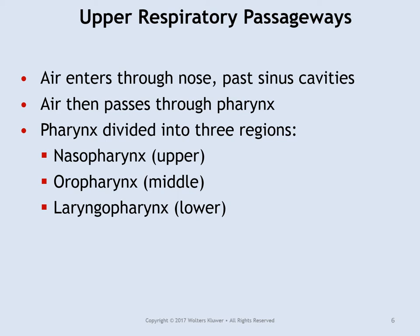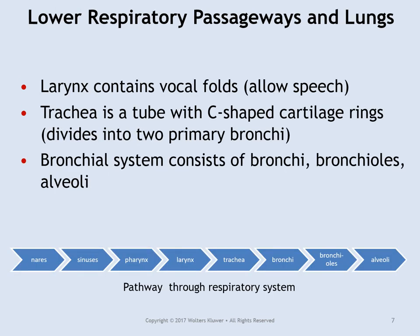This goes over the pathway we just covered. Air enters through the nose, goes past the sinus cavities, down through the pharynx, which includes the nasopharynx, the oropharynx, and the laryngopharynx. The pathway is: nares or nose, sinuses, pharynx, larynx, trachea, bronchi, bronchioles, and alveoli.